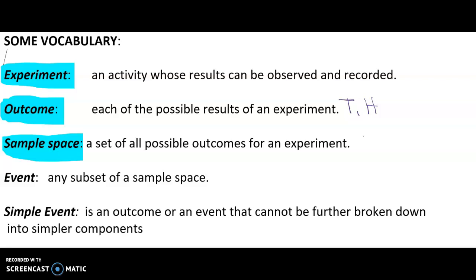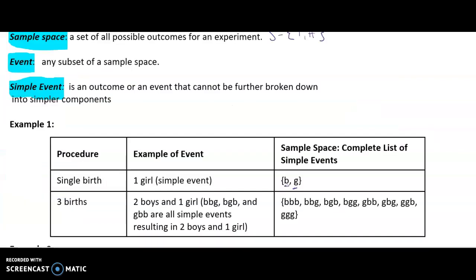The sample space is the set of all possible outcomes of your experiment. So our sample space S for flipping a coin would be tail or head. An event would be any subset of a sample space. If an event cannot be broken down further, it's called a simple event — an outcome that cannot be further broken down into simpler components.